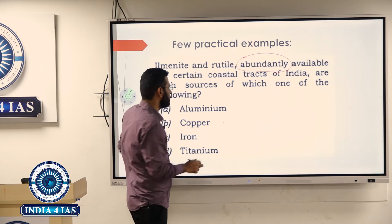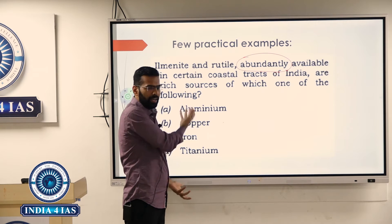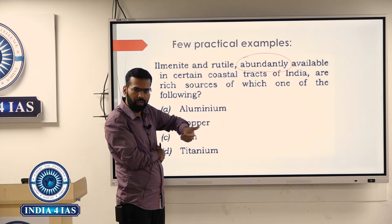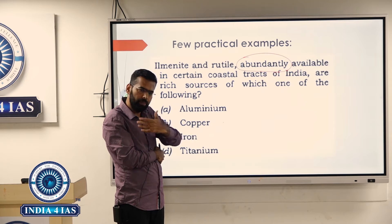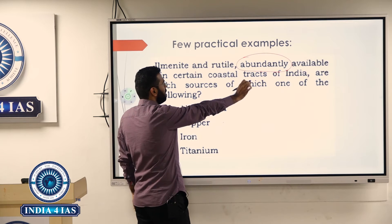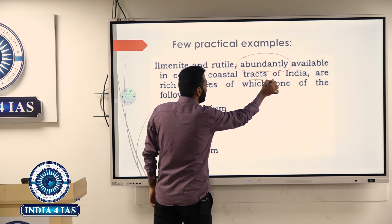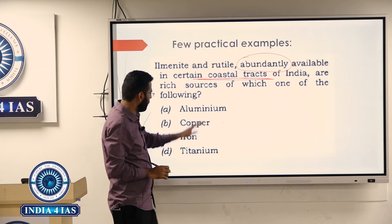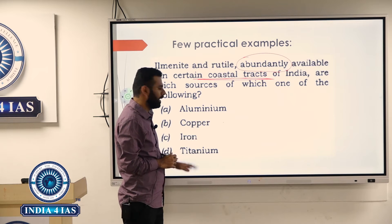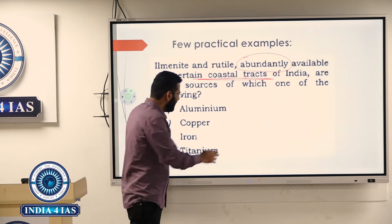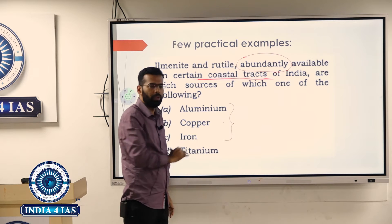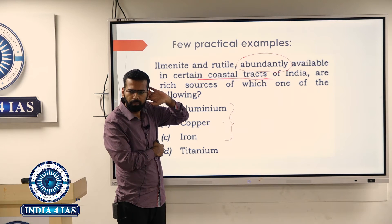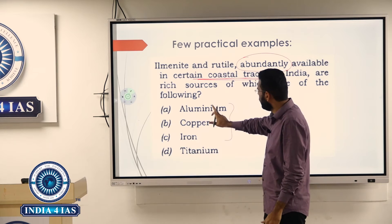If you see the options — aluminium, copper, iron, and titanium — these are generally known mineral resources. Even if you don't know what is being asked, you know the distribution of aluminium, copper, and iron. They are usually found in the interior of the land. He is saying 'abundantly available in coastal areas' — iron is found in some coastal areas but abundantly in the interior.